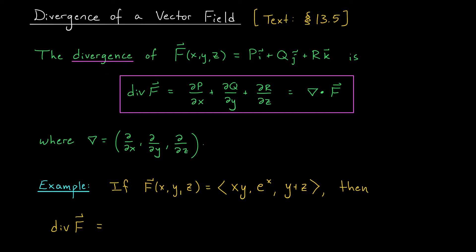Specifically, if we have a vector field f with component functions p, q, and r, then the divergence of our vector field, div f, is defined as: partial p by partial x plus partial q by partial y plus partial r by partial z. Notice that this is exactly the dot product of our derivative vector introduced in the last lesson with the vector field f.